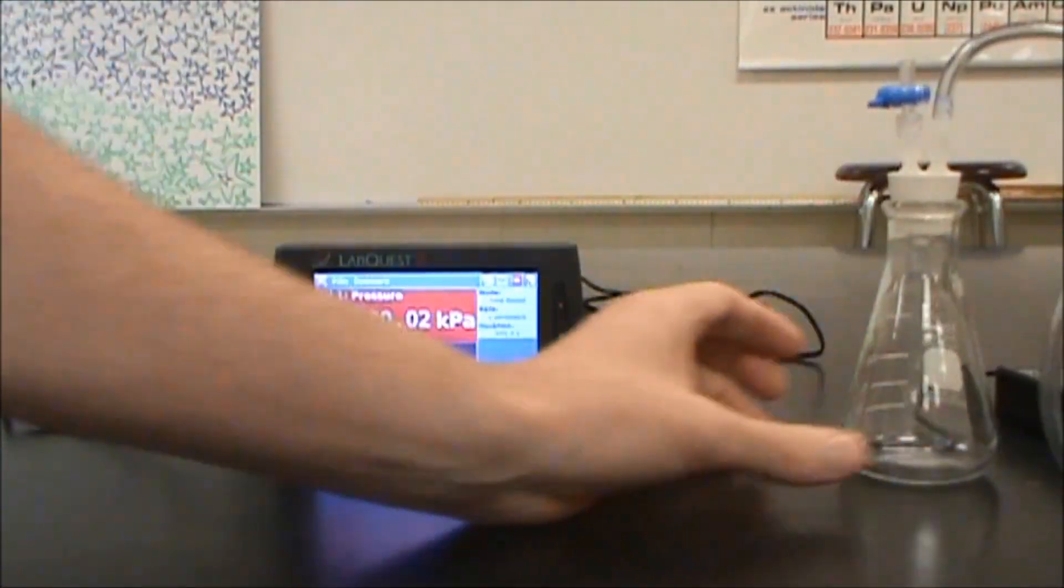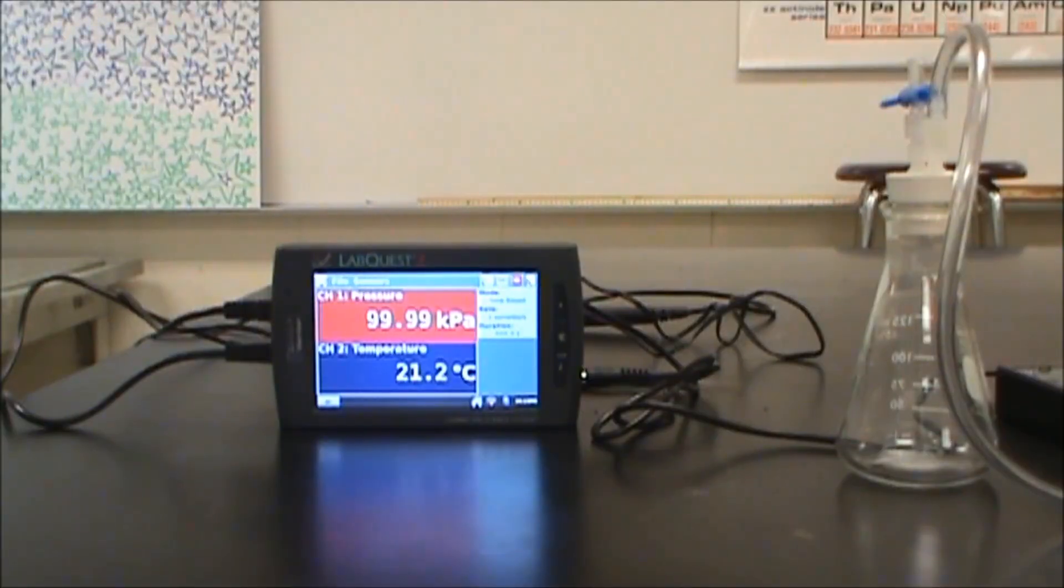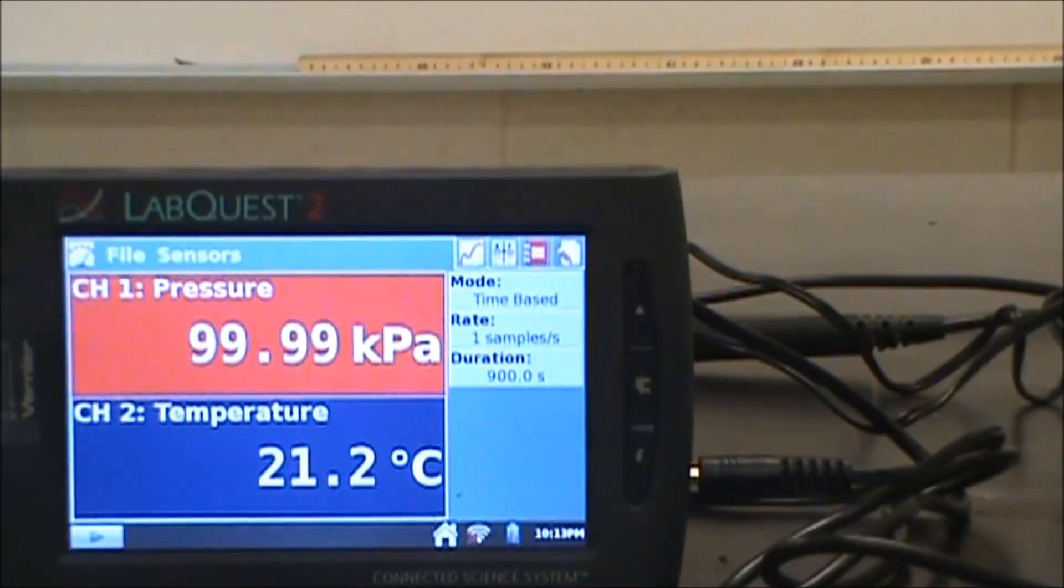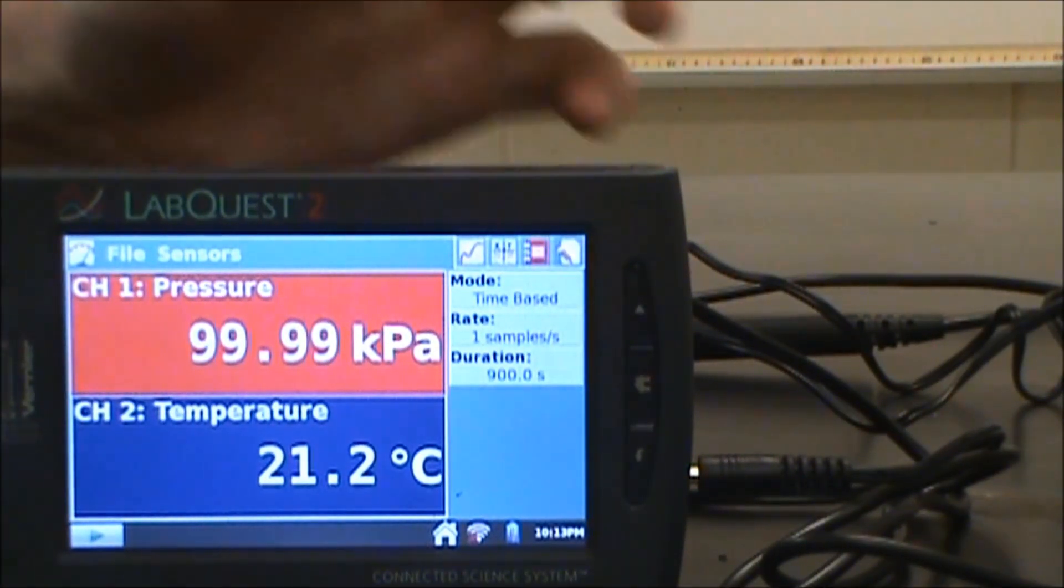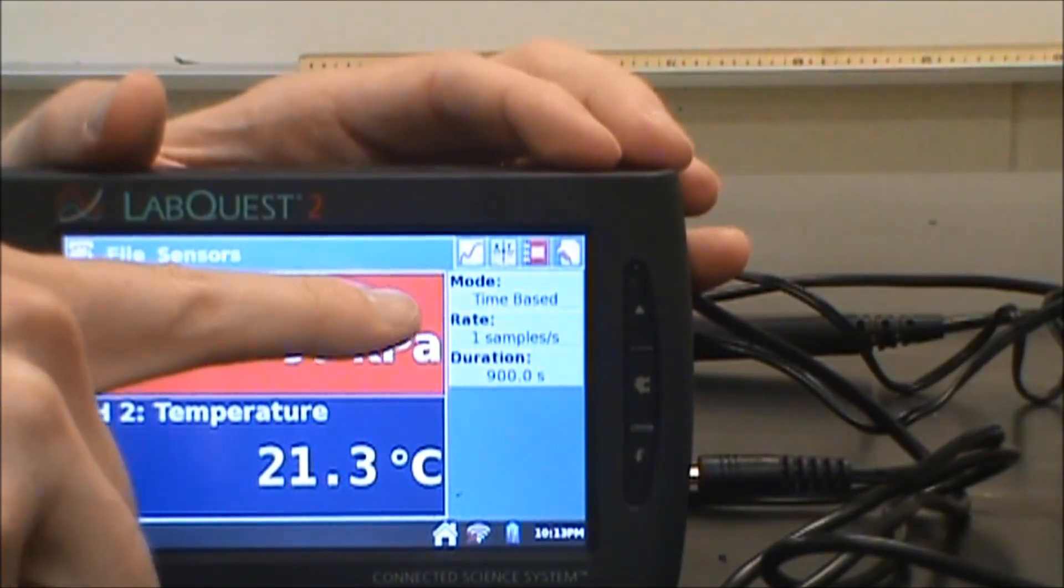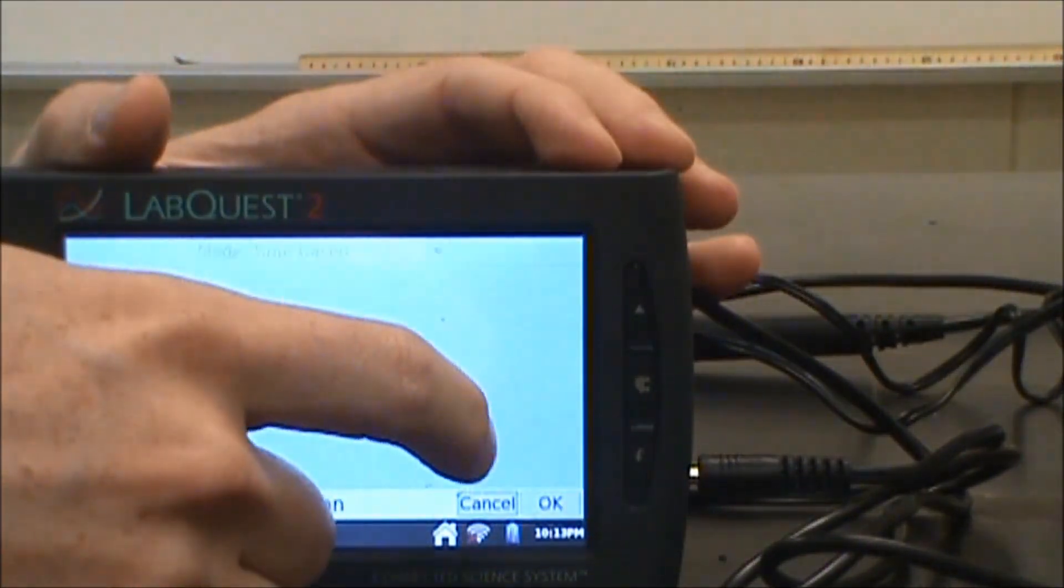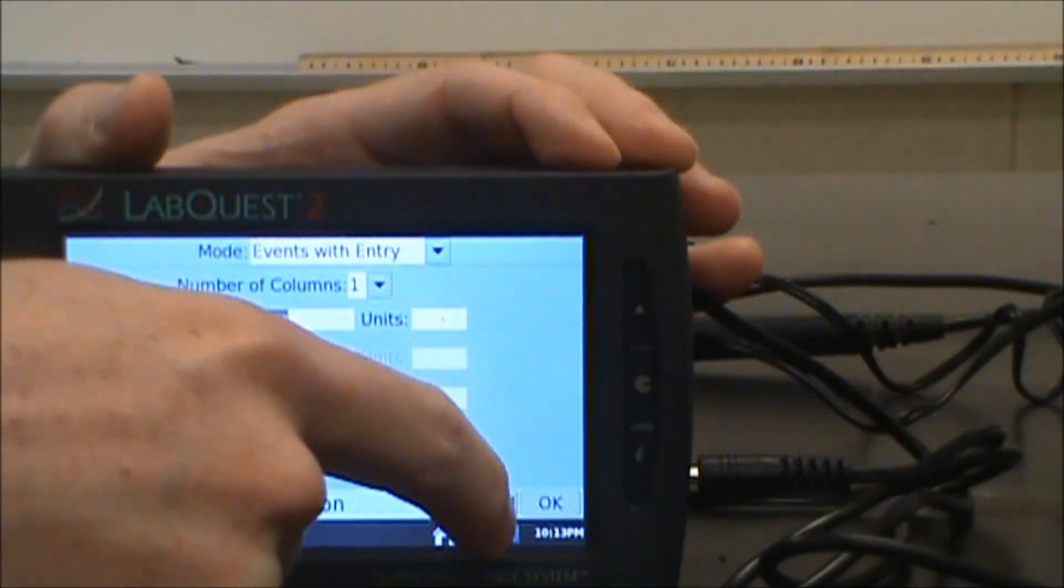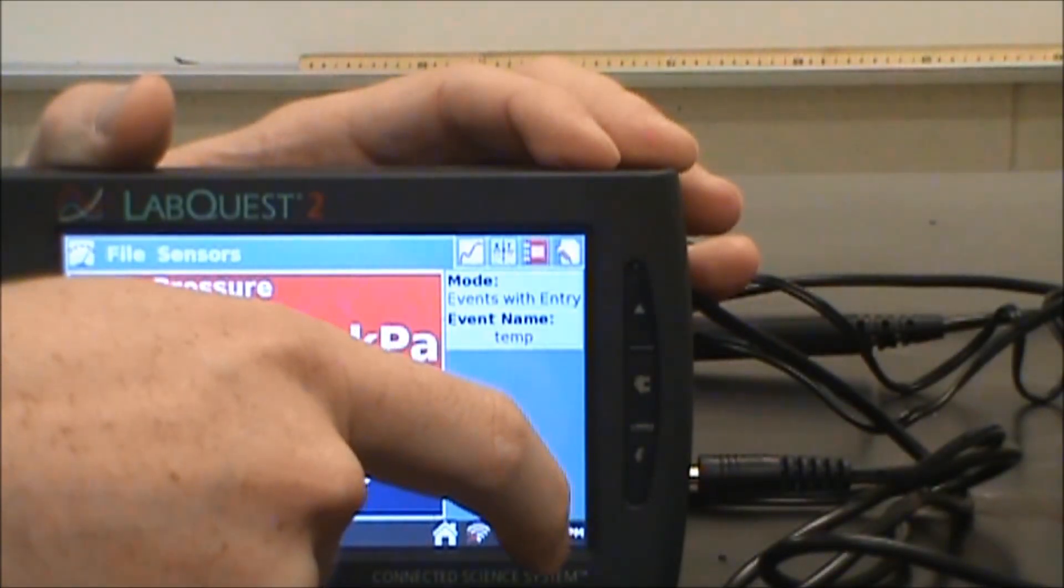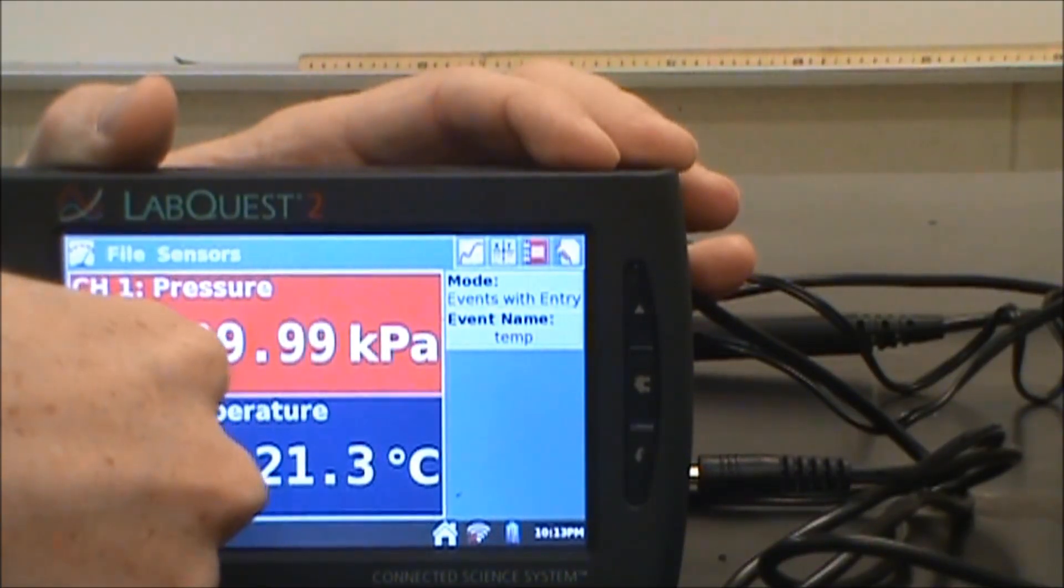Right now this is giving me the pressure inside of that flask. What I want to do is show you how to give you that in a graph form at various temperatures. The first thing I'm going to do is go to where it says mode time-based, click on that, and I'm going to go from time-based to events with entry. I'm going to hit OK, and then I'm going to hit play.